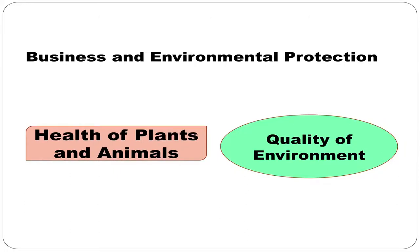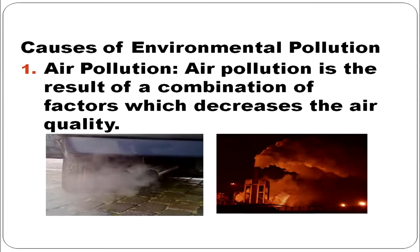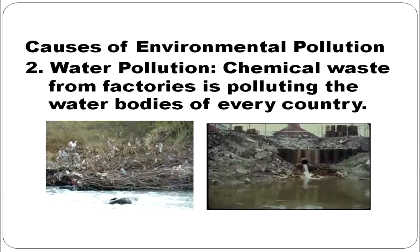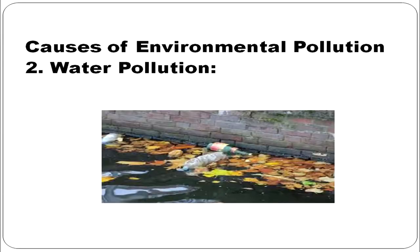Moving to business and environmental protection — the health of plants and animals affects the quality of the environment. As a result of rapid industrialization, fast food centers emerged in India, more traffic appeared, and this has degraded the quality of the Indian environment. Causes of environmental pollution include air pollution, which results from factors that decrease air quality, and water pollution — chemical waste from factories is polluting water bodies, and people are also polluting water by throwing flowers, plastic bottles, etc.